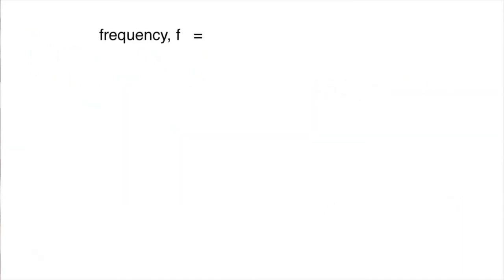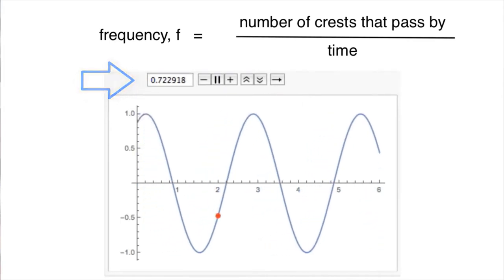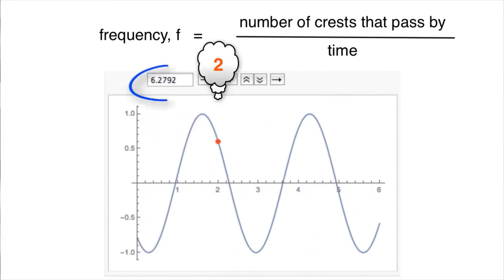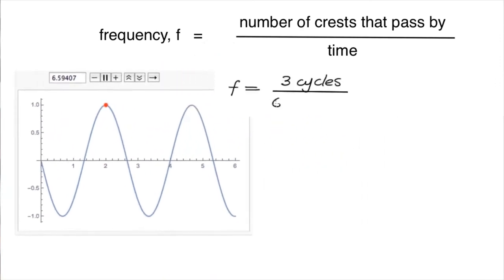The frequency of the wave is the number of crests that pass by in a time interval. So you can use a timer and count the number of crests that pass by. We start at zero and count crests 1, 2, 3 in a time of 6.6 seconds. That is, three cycles have passed in 6.6 seconds, or the frequency is 3 on 6.6 or 0.45 cycles per second.